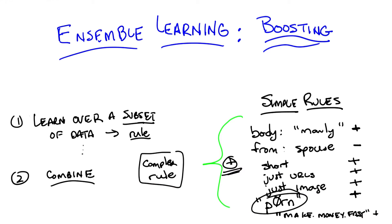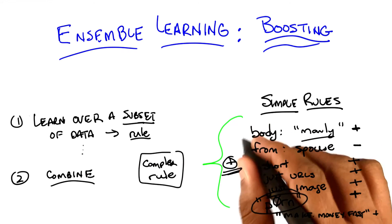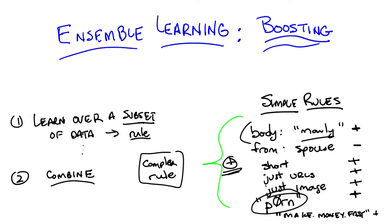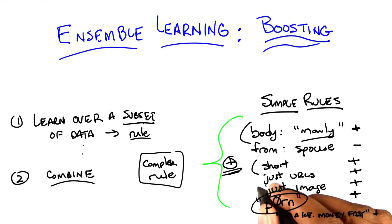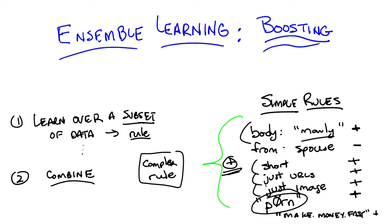In the email case, I might look at a small subset of email that I know is already spam and discover that the word 'manly' shows up in all of them, and therefore pick that up as a rule. That's going to be good at that subset of mail but not necessarily good at the other subset. Similarly, I might discover that a lot of spam mails are short, or just images, or just URLs. That's how I learn these rules by looking at different subsets — rules that are very good at a small set of data but not necessarily good at a large set.